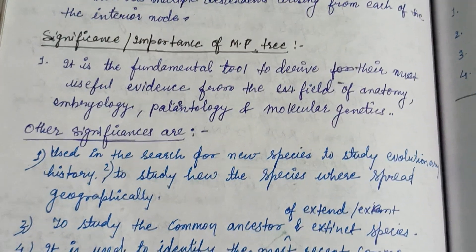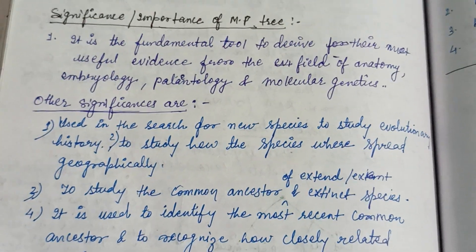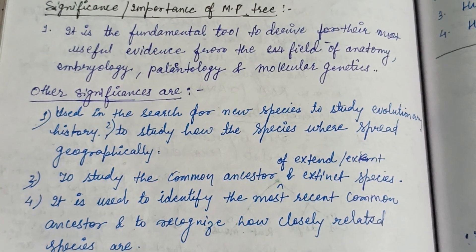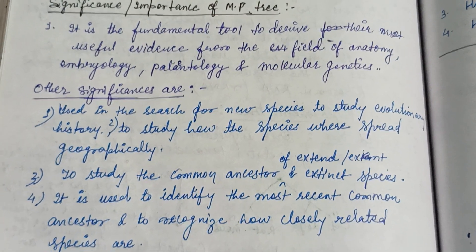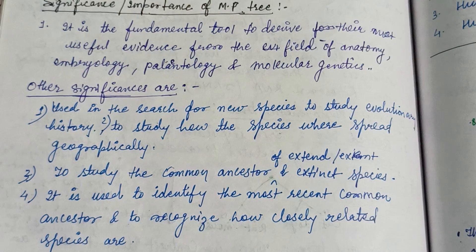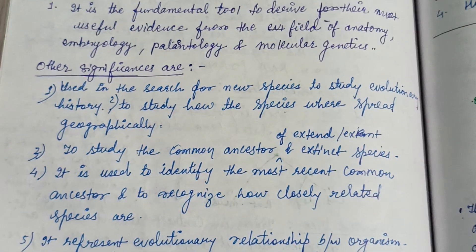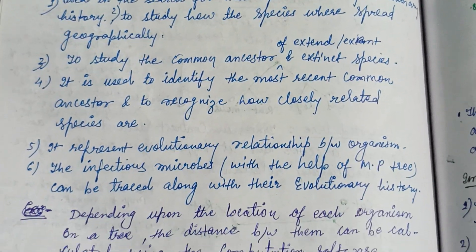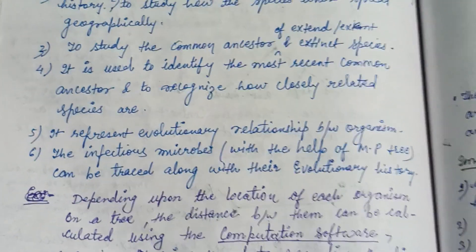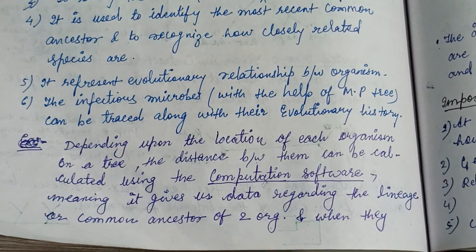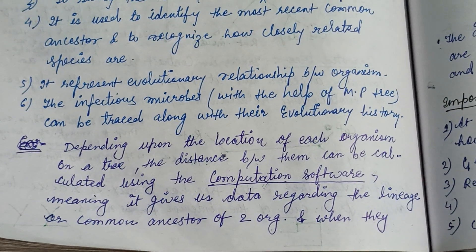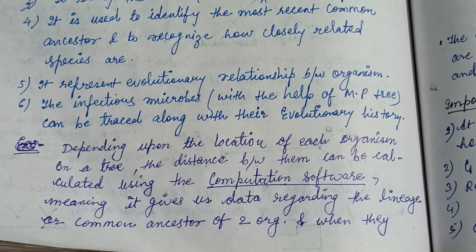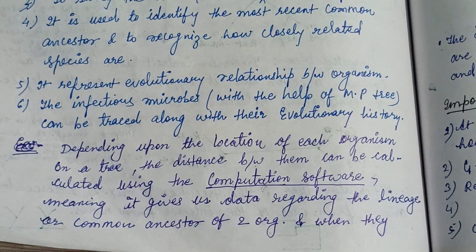Regarding the significance and importance of the molecular phylogenetic tree: it is used to search for new species, to determine where species spread geographically, to identify the common ancestor of extant and extinct species, to identify the most recent common ancestor, and to recognize how closely they are related. Depending upon the location of each organism on a tree, the distance between them can be calculated using computation software.